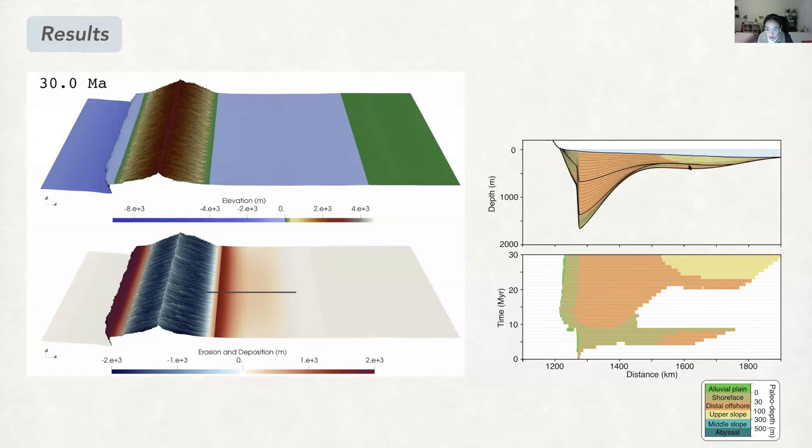We can see that here it forms a wedge and sediment fills the foredip zone and also transported over the forebulge and gets deposited at the back bulge. At this place we also see major unconformities during this period of time due to the limited amount of sediment supply.